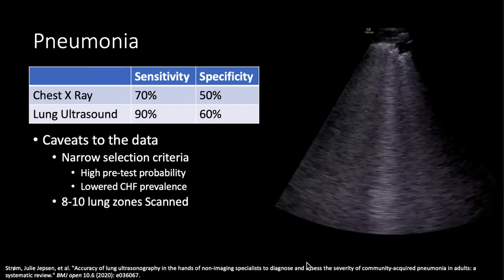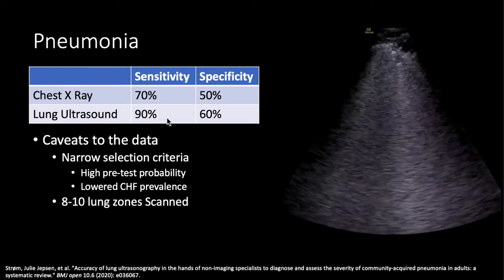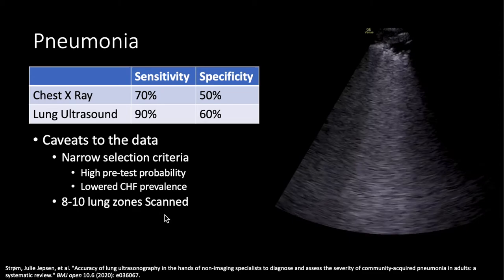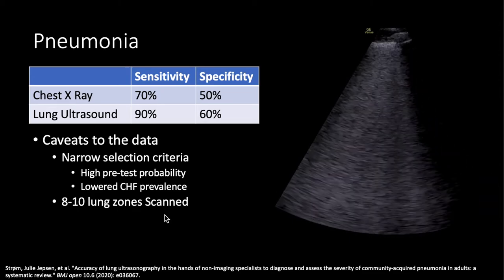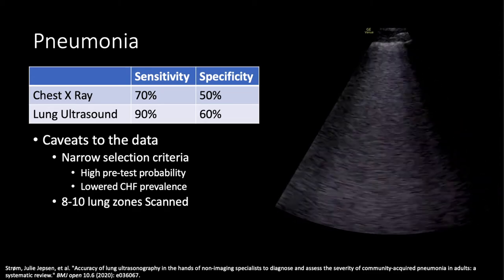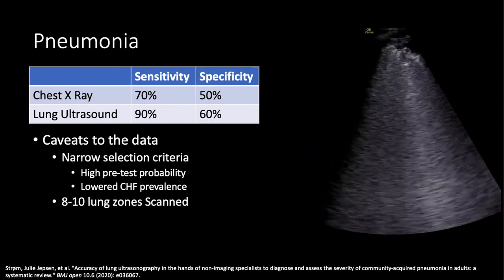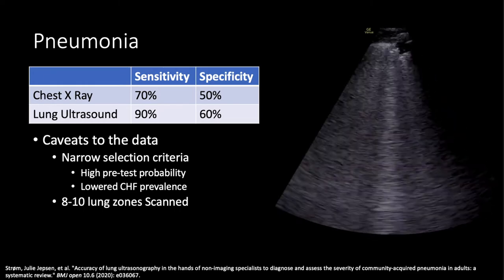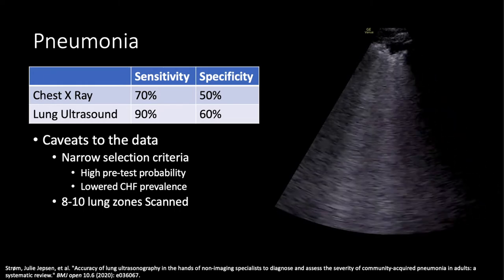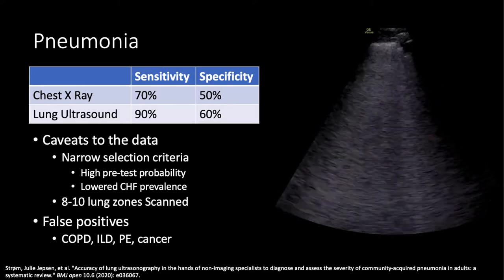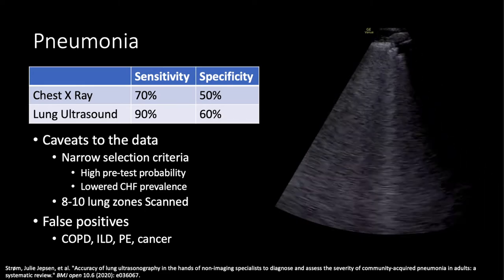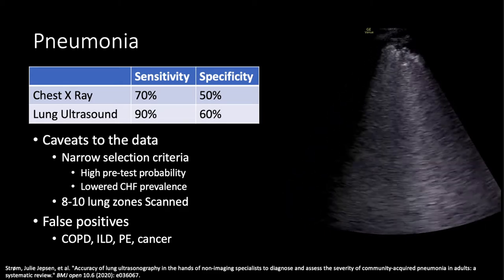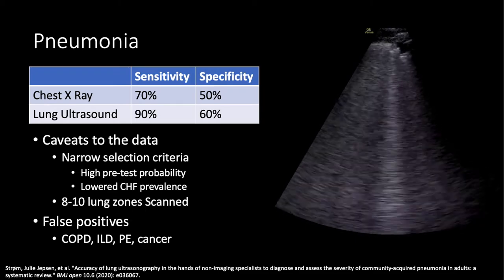Another caveat is that many studies showing 90% sensitivity for lung ultrasound are scanning eight to ten lung zones, more than we often do clinically. I typically endorse a six-zone protocol — anterior, lateral, and posterior on both lungs. But if you really want to be sensitive for pneumonia, you probably need to look at more zones. There are also a lot of false positives: B-lines can be caused by interstitial lung disease, pulmonary embolism, cancer, and even COPD can give a couple B-lines in the lower lobes.